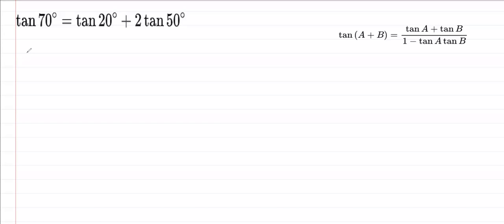Let's begin with the LHS. We have LHS as tan 70°, and we can clearly see that we have to write this in terms of A plus B, where the two angles are 20 and 50. So clearly we are going to split 70 as 20 plus 50°. I can write tan 70° as tan(20° + 50°).